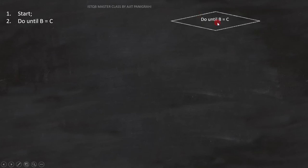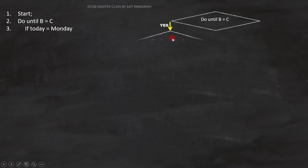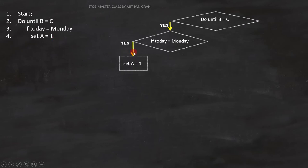I want to mention an important point here. Since our objective is to find the decision coverage, I am representing this as a normal condition. The third line is 'if today equals Monday.' This is a condition, so we can represent it like this on the flowchart. If the condition becomes true, line number 4 — set A equals to 1 — will execute. Since it is a statement, we can represent it like this.